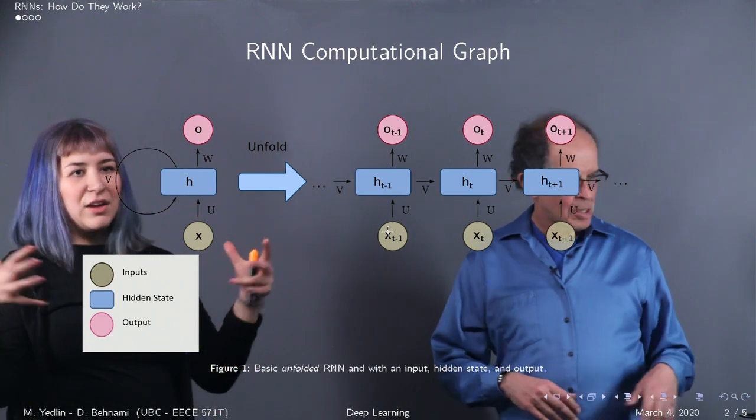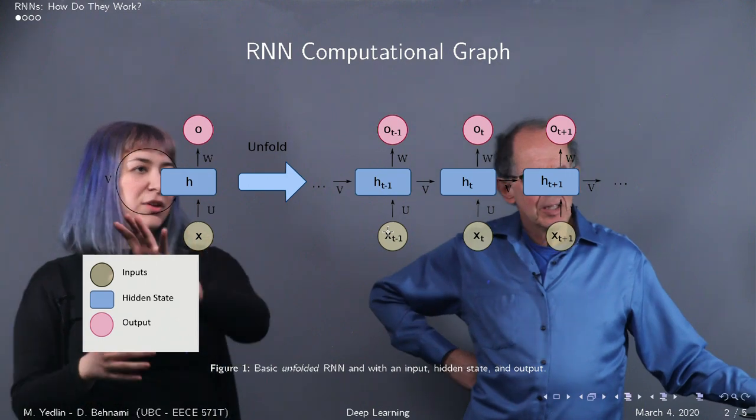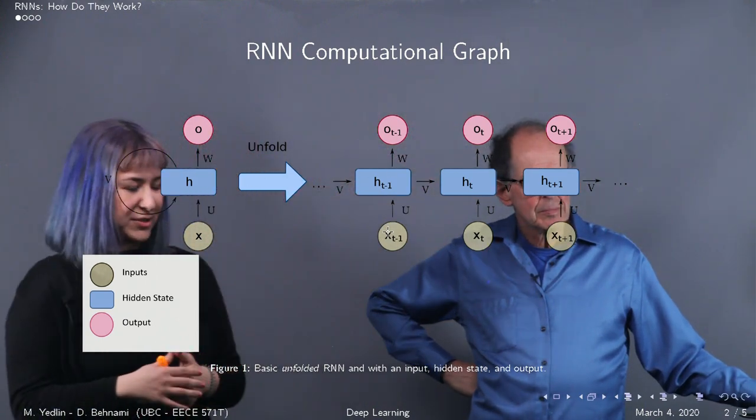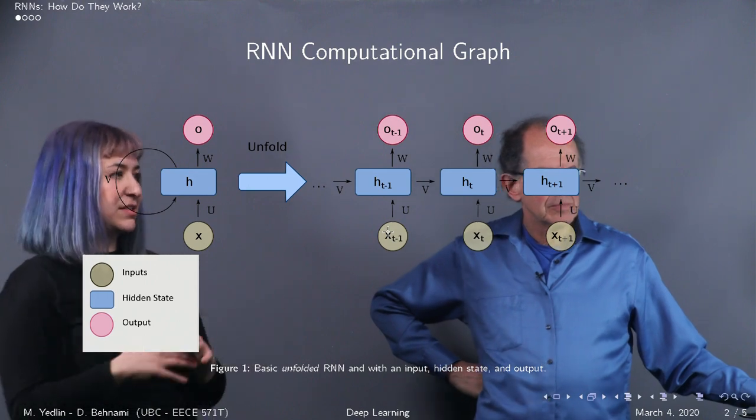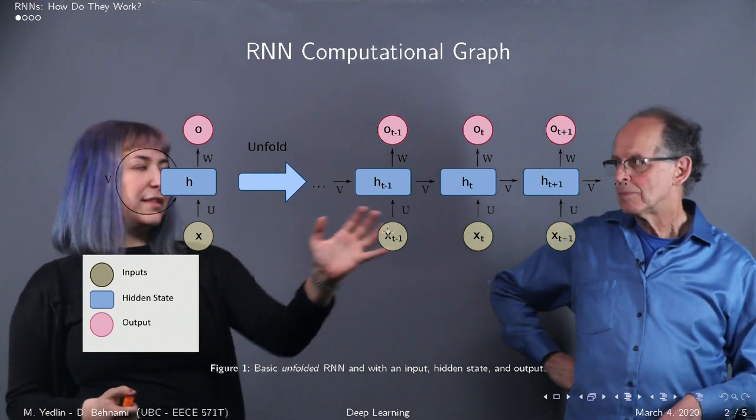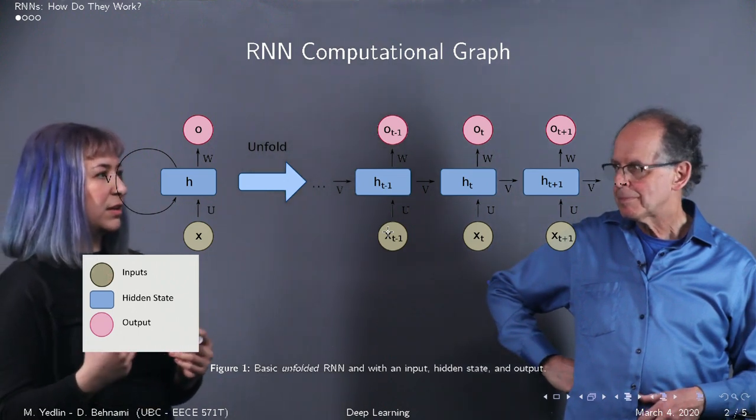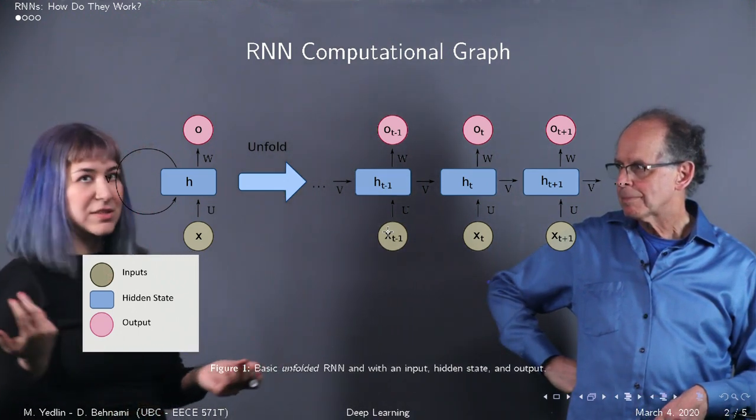It actually makes a lot more sense and becomes much more intuitive when you look at the unraveled version because it starts to look a lot like the multilayer perceptrons that we saw earlier.